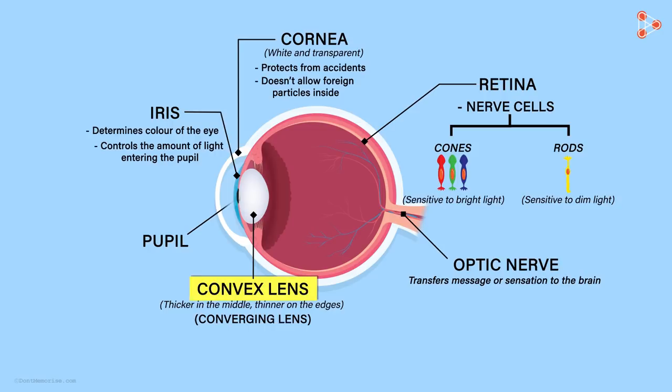Behind the pupil, there is a converging lens which focuses the light on retina. Retina consists of two types of nerve cells, namely cones and rods. They transfer the message through the optic nerve.